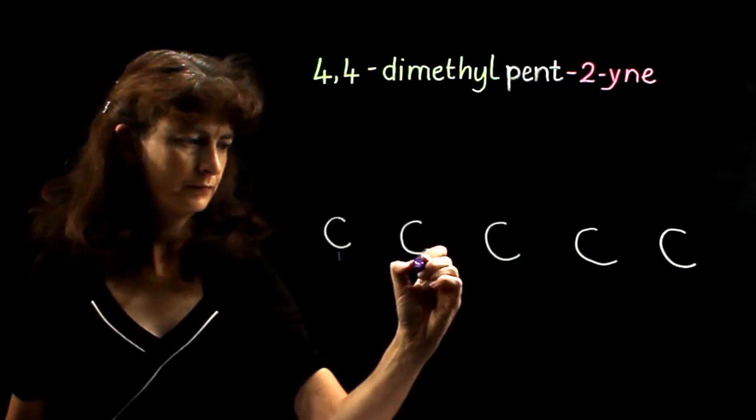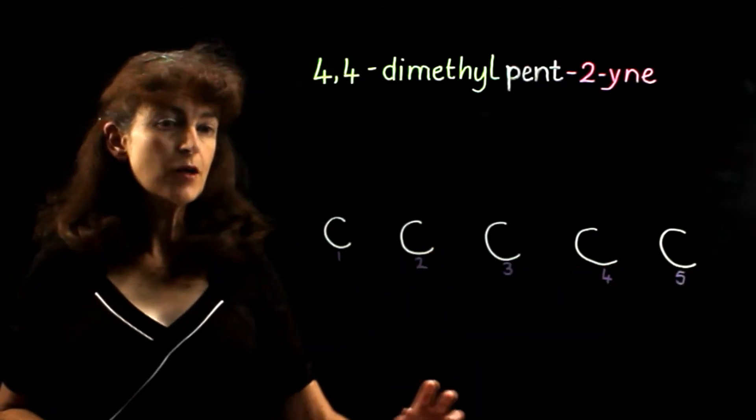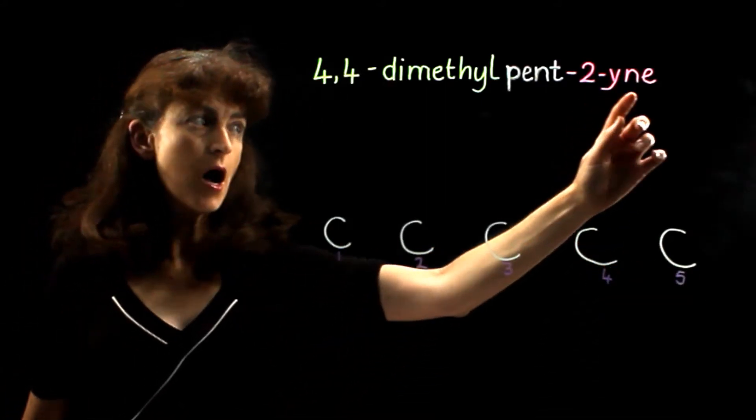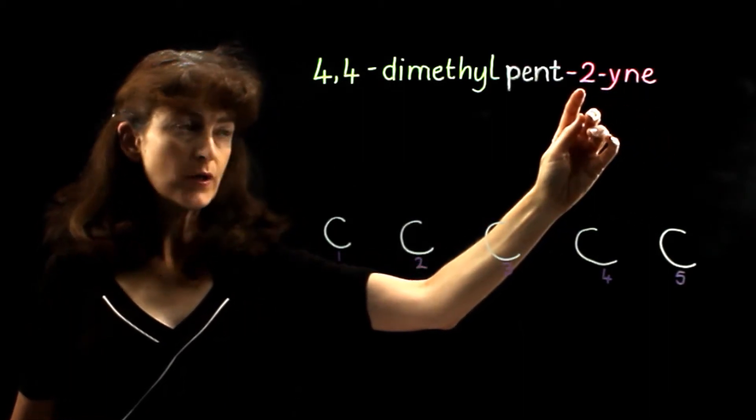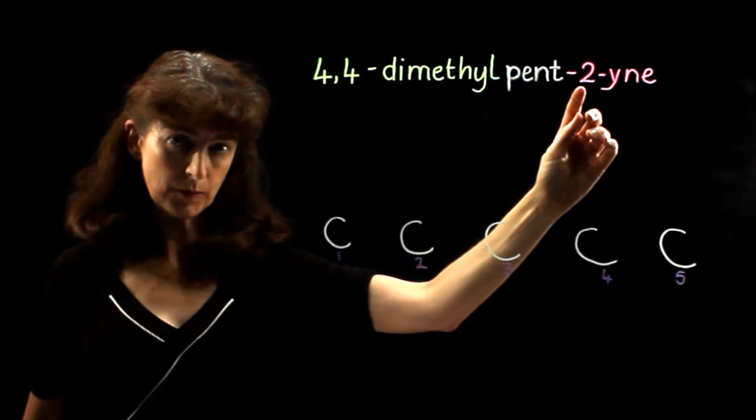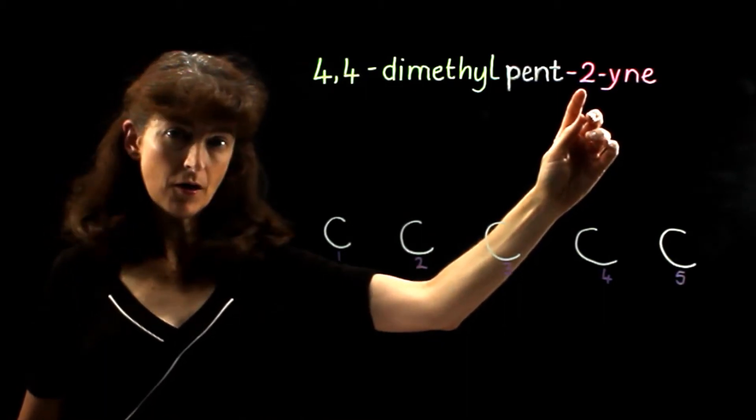Let's number them. We see that this compound is an alkyne, which means it must have a triple bond and we're told the position of that triple bond on carbon two.